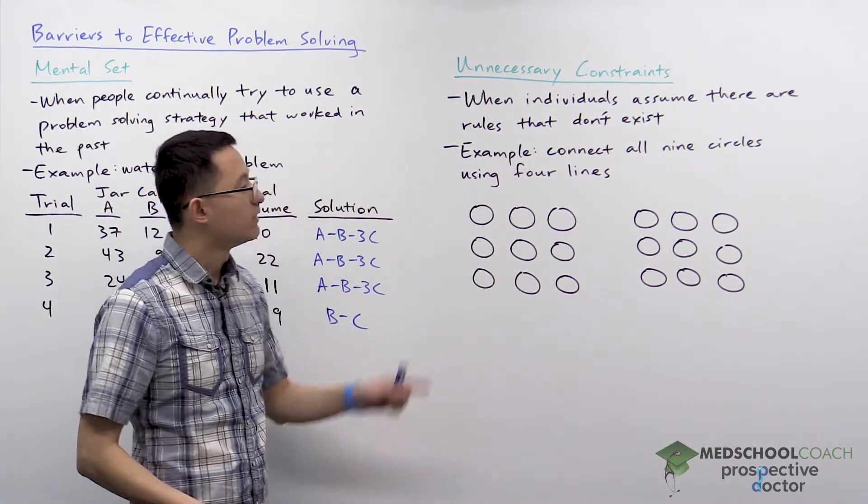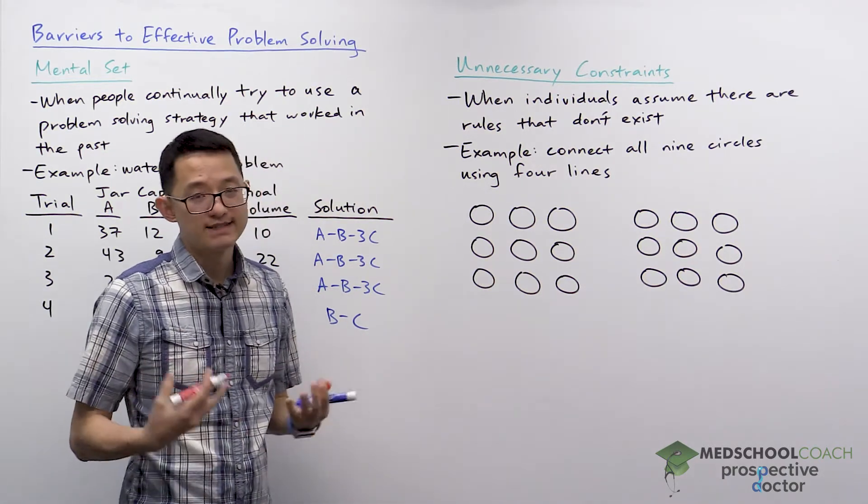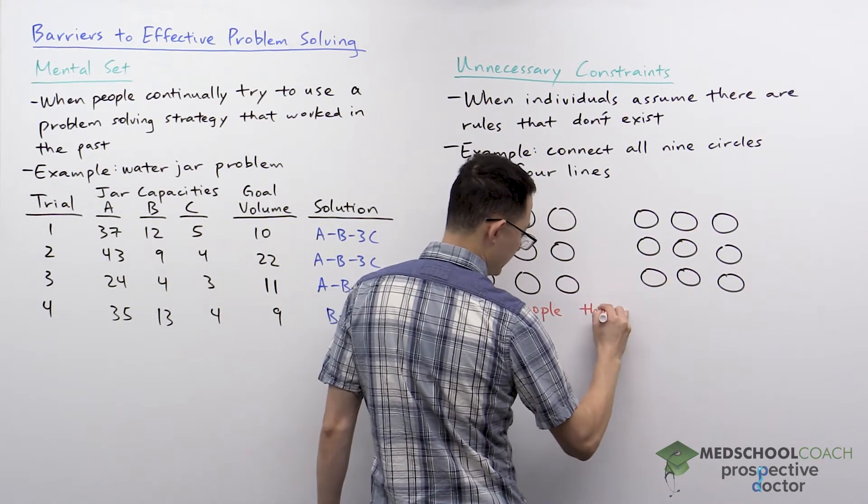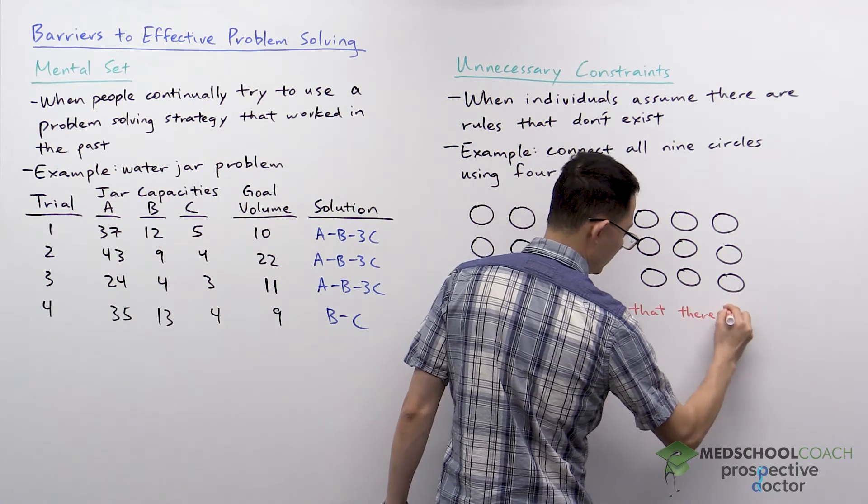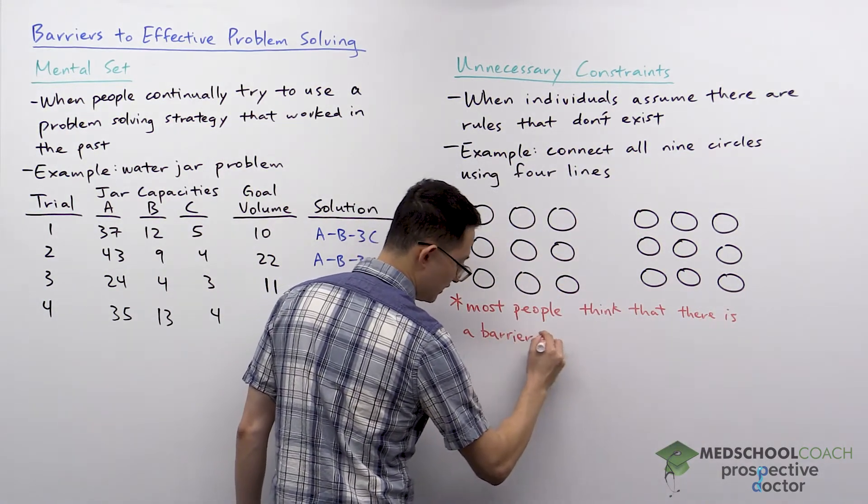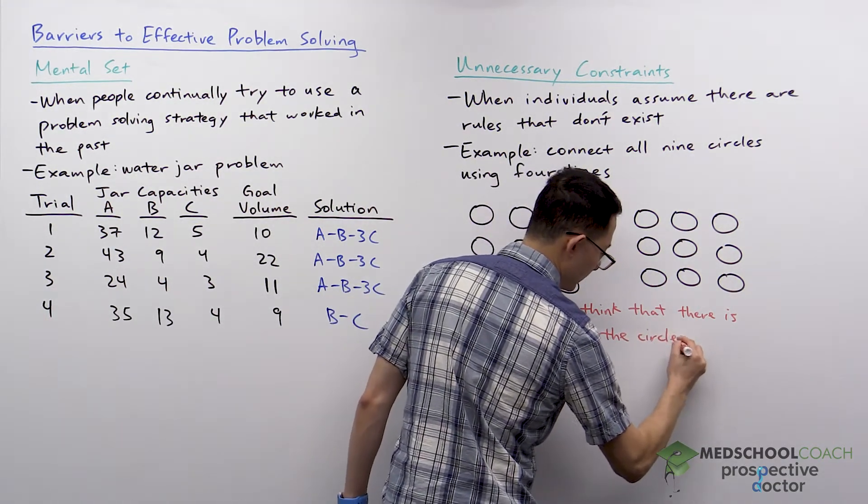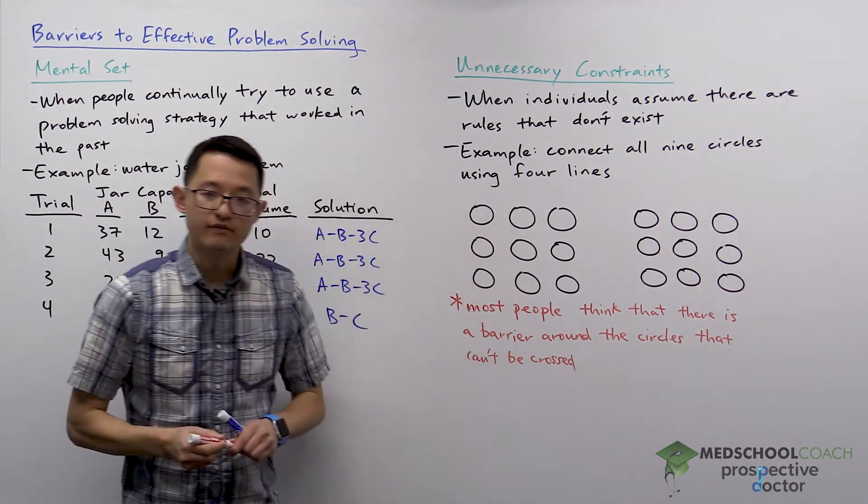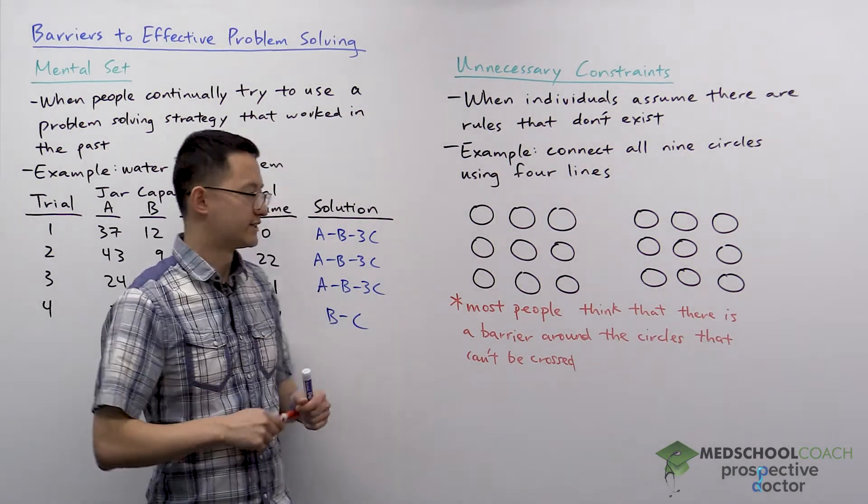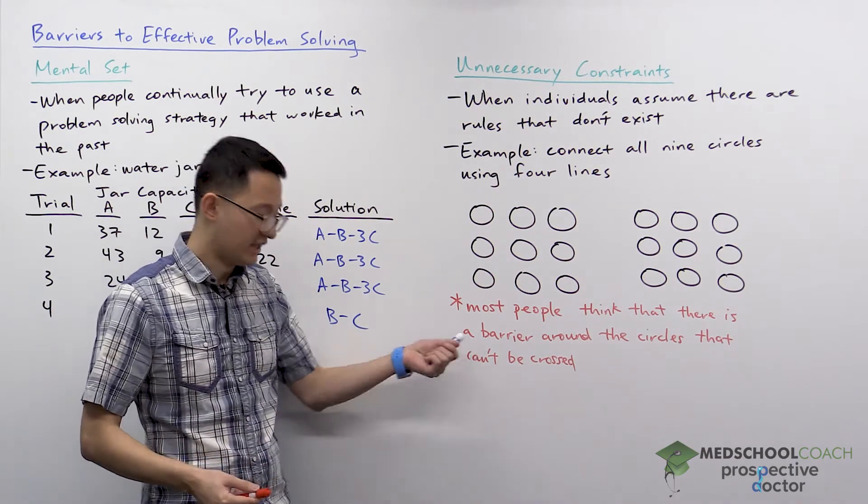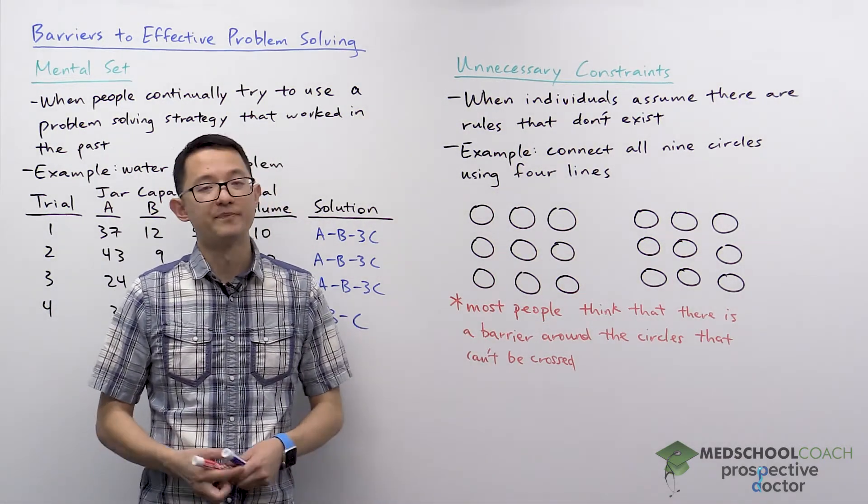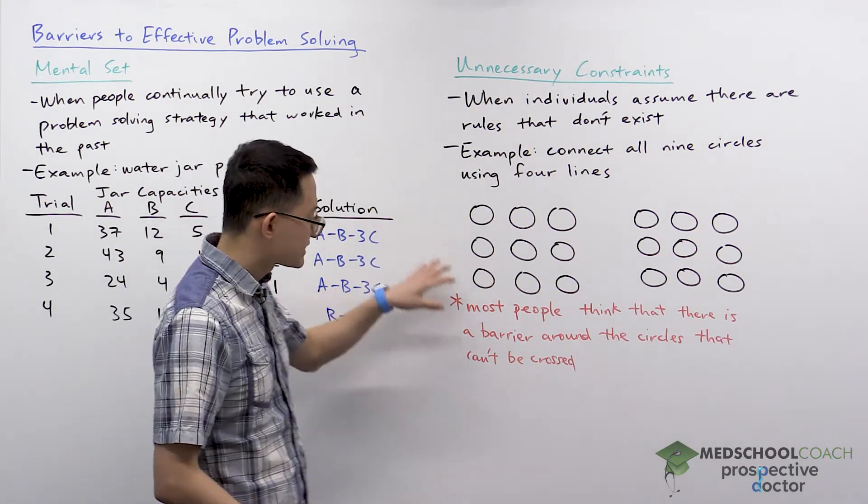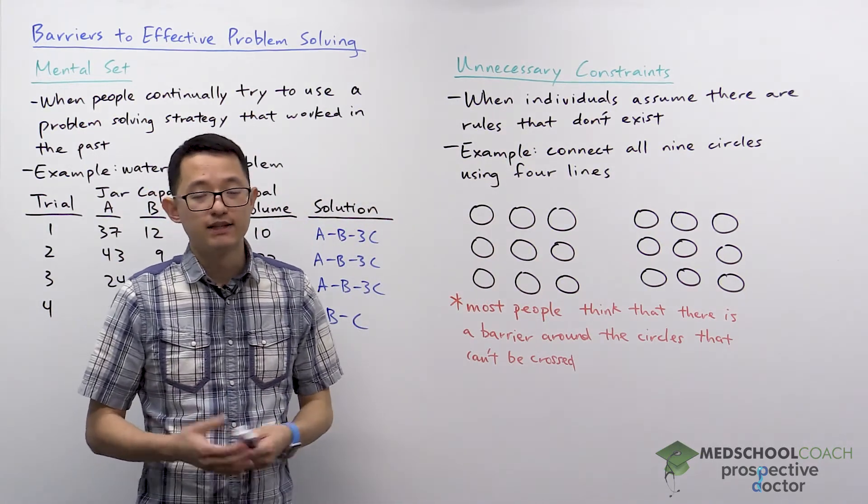Now, the problem with most people when they get to this problem is they come up with this unnecessary constraint. That unnecessary constraint is that most people think that there is a barrier around the circles, and this barrier around the circles can't be crossed. If you try it yourself, you can just look at it. How can I draw four lines and possibly connect all nine circles? And as it turns out, it's impossible if you have this unnecessary restraint. So what can be very helpful for a lot of these cases where you're solving a problem is to literally think outside the box. So if we think outside the box and don't pretend that there is this barrier around this box, then you might arrive at several solutions.